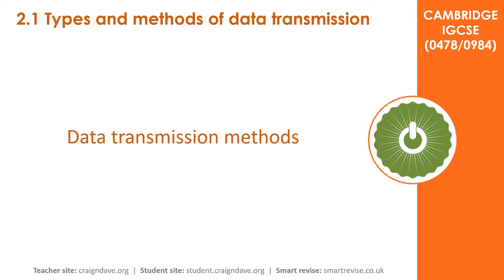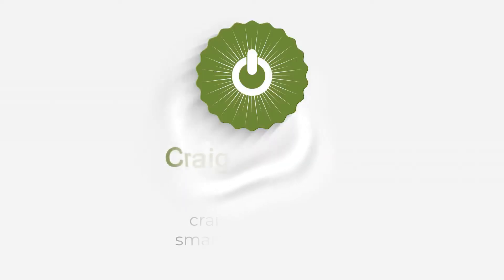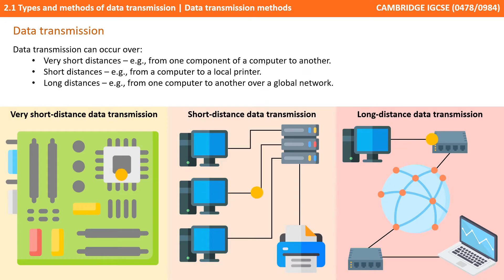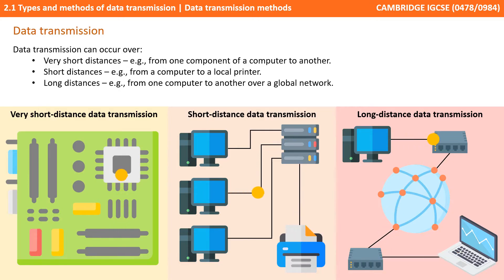In this video we take a look at data transmission methods. Data transmission can occur over very short distances, for example from one computer component to another, short distances such as from a computer to a locally connected printer, and of course over long distances from one computer to another over a global network.